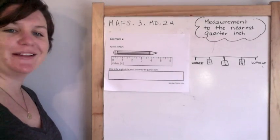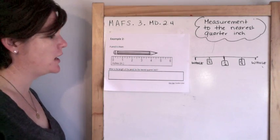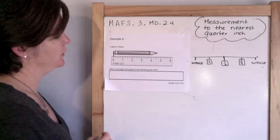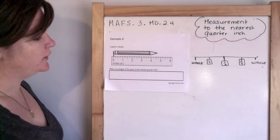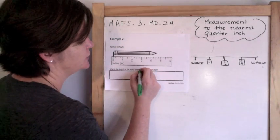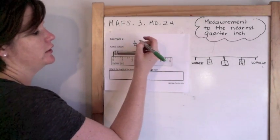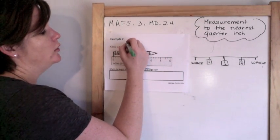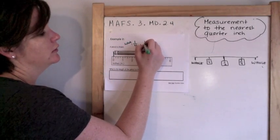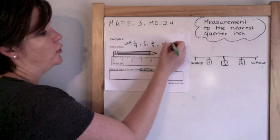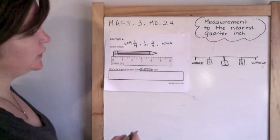Example two: another pencil is shown. Again, my eraser is lining up with my zero. What is the length of the pencil to the nearest quarter inch? So a quarter inch would be one fourth, would be the whole, one fourth, one half, three fourths, or the next whole number. So let's see.